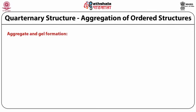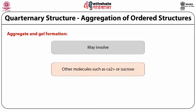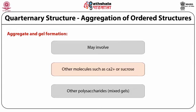The quaternary structure involves aggregation and hardwood-like structure. Aggregate and gel formations may involve other molecules such as calcium²⁺ or sucrose, other polysaccharides, or mixed systems. Case studies of naturally occurring polysaccharides include alginates, pectin, xanthan, galactomannans, cellulose, and starch.